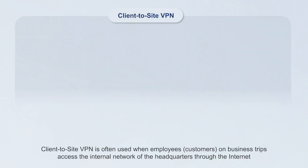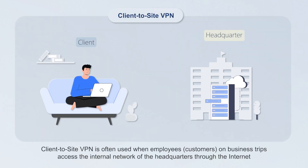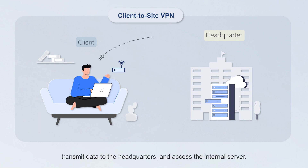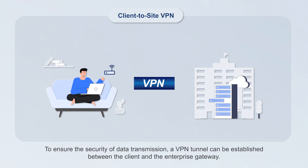Client-to-site VPN is often used when employees or customers on business trips access the internal network of the headquarters through the internet, transmit data to the headquarters, and access the internal server. To ensure the security of data transmission, a VPN tunnel can be established between the client and the enterprise gateway.